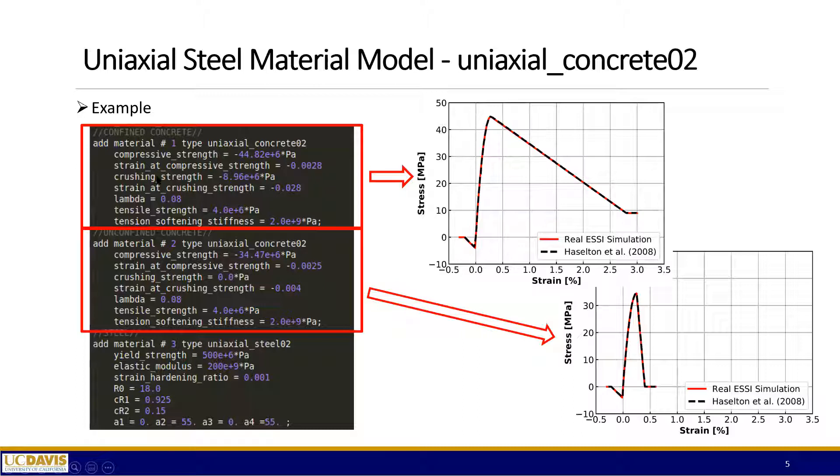Yes. And if I may say, strength of materials conventions apply throughout Real-ESSI. So negative means compression, positive means tension. And the units for strains are, strain has no units, so this is meter per meter. And for stress, for strength, you can use pascals, kilopascals, megapascals, you name it, but you have to have a unit. Go ahead. Yes, exactly.